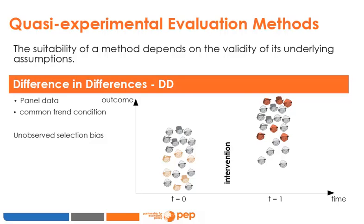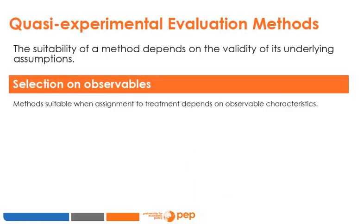Such a procedure of assignment to treatment is impossible to control directly, because it depends on factors that we do not observe. There is unobserved selection when a program is assigned to those who are most in need, or when the program participants are the most motivated, or when the treatment is given to those who will benefit the most — all conditions potentially determined by unobserved factors. When assignment to treatment depends on observable characteristics which can be measured fairly accurately and are available in the database, we can use matching methods or the regression discontinuity (RD) method.